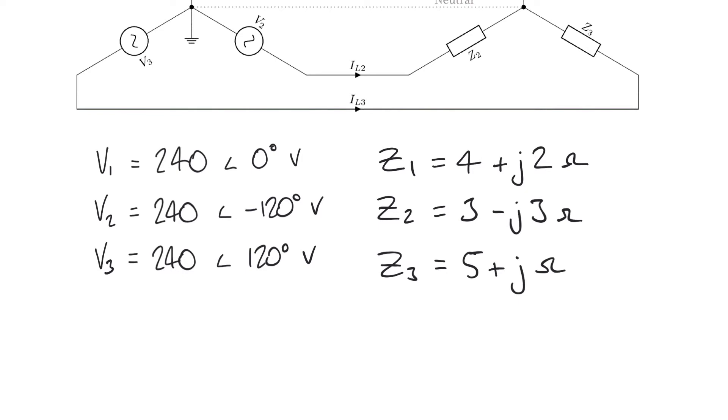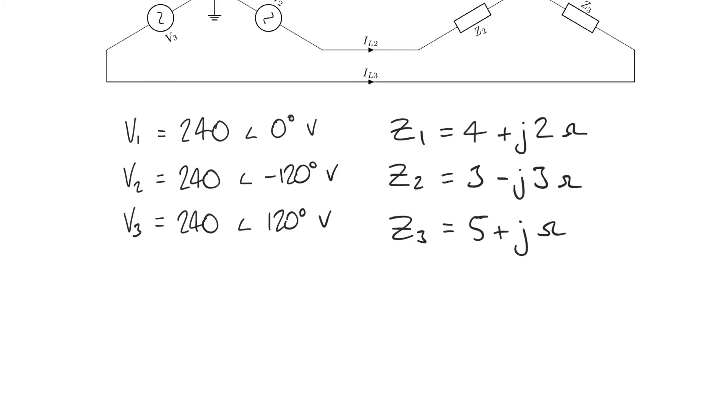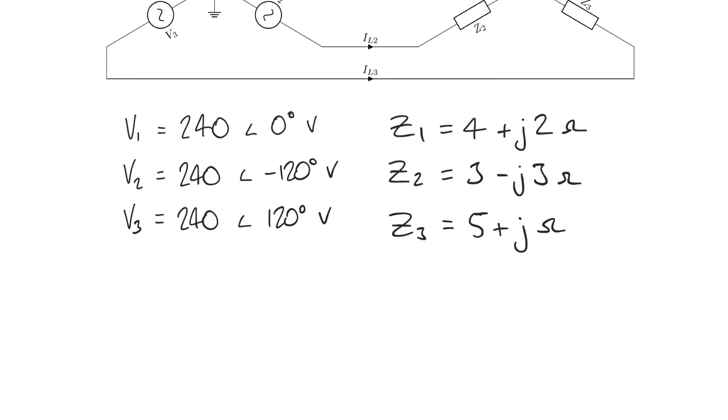In order to calculate our phase currents easily, it's probably best to convert these impedances into polar form. Just by using a pole function on your calculator we can convert these impedances that are in rectangular form into polar form and we get something that looks like this.